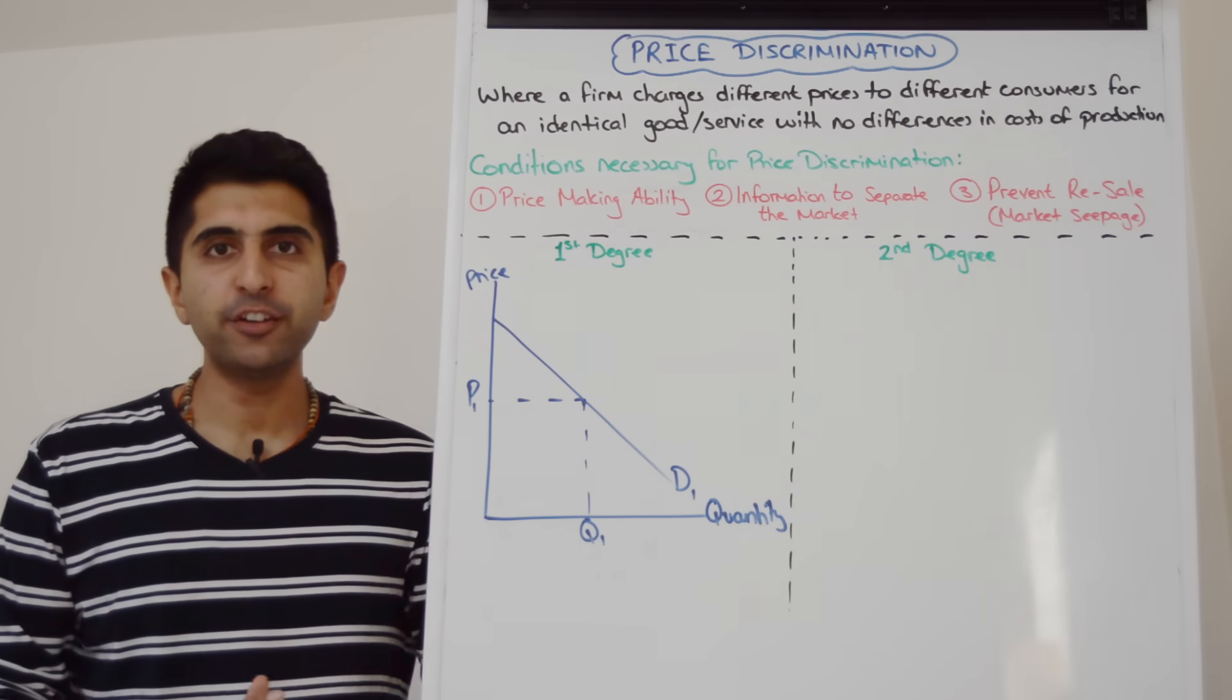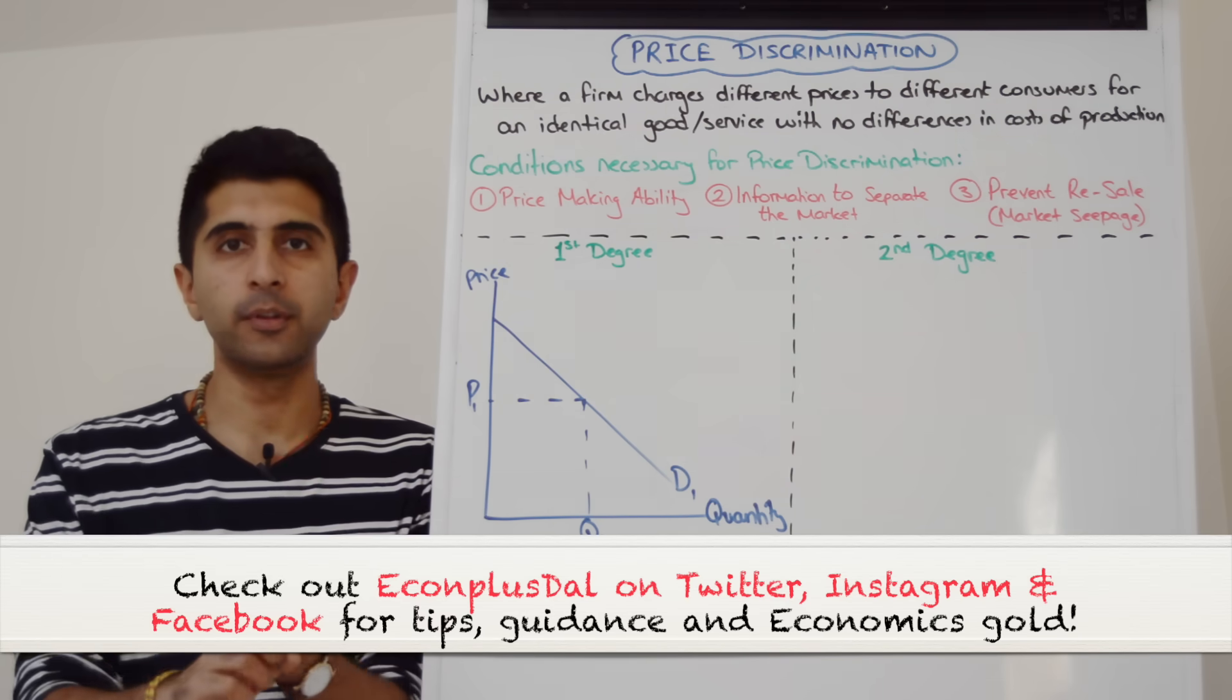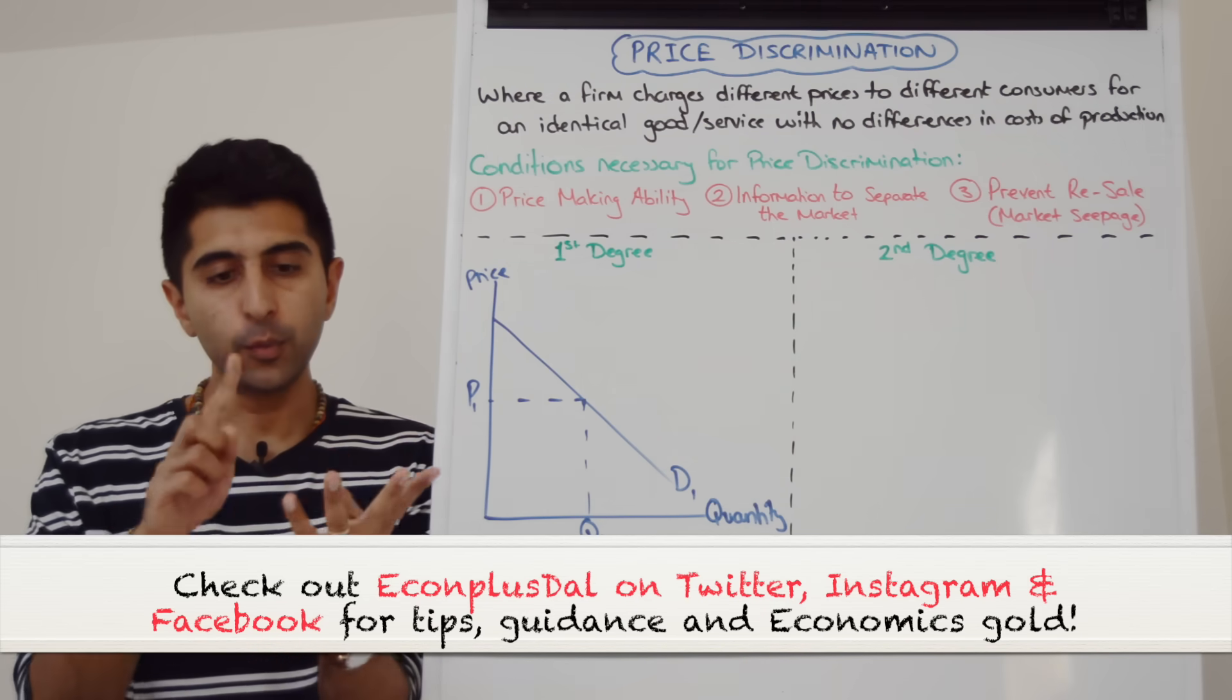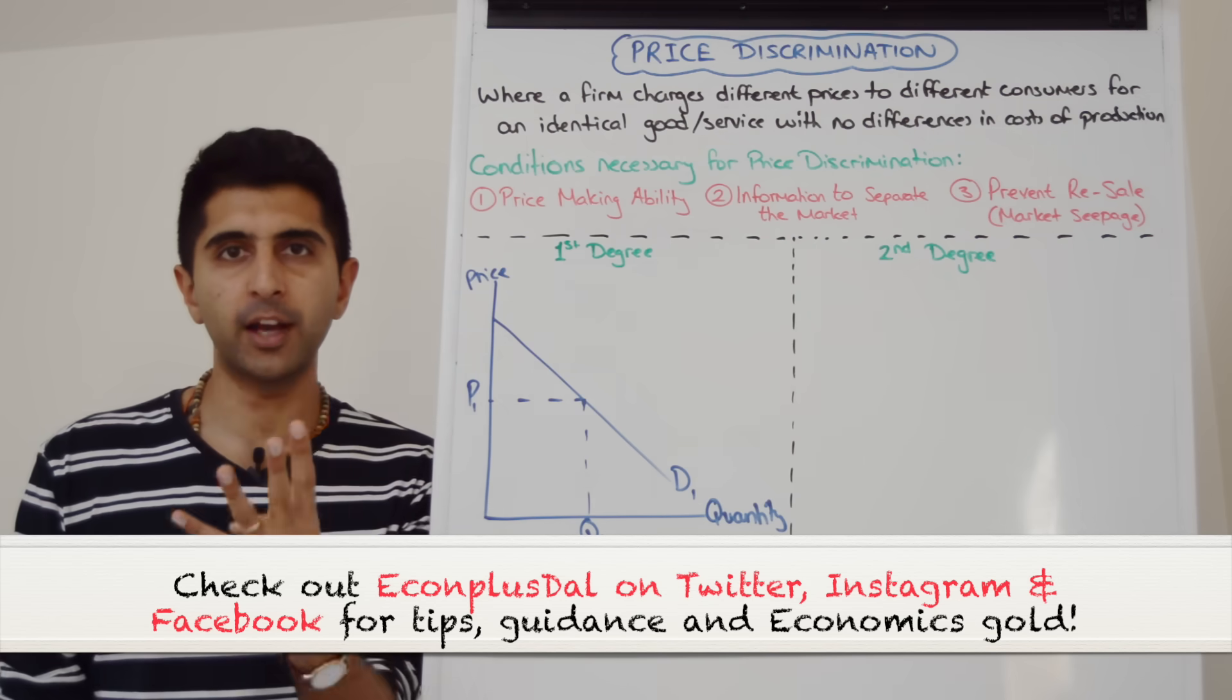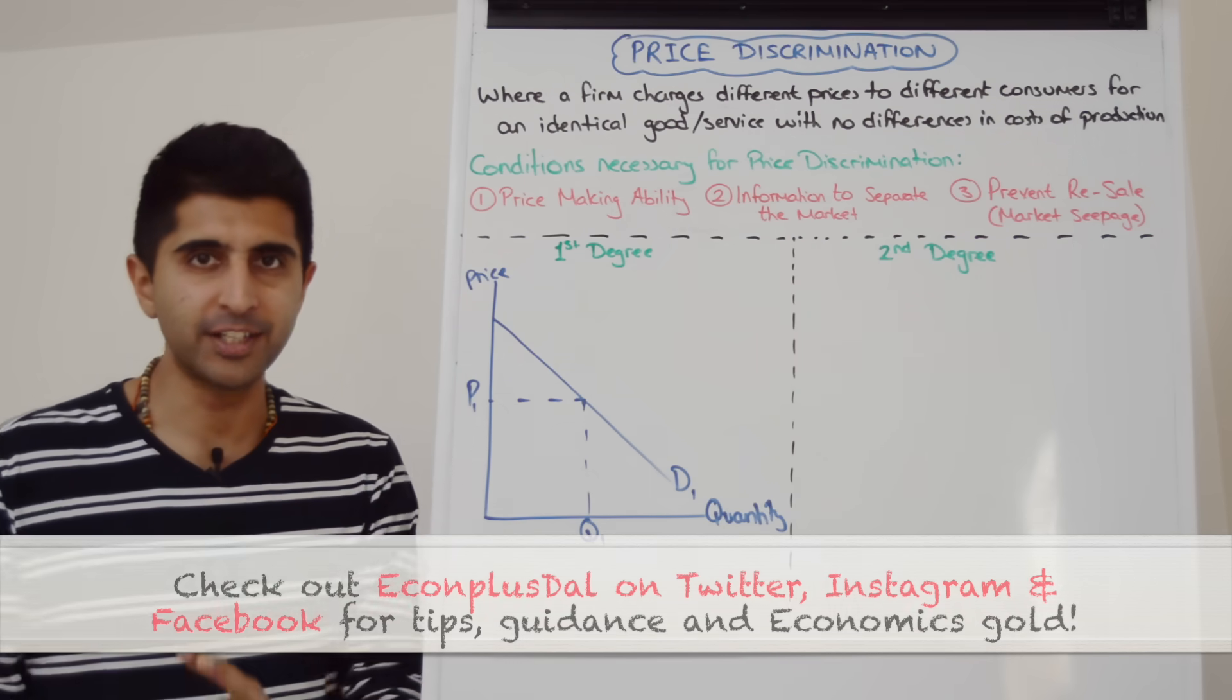Hi everybody! Price discrimination occurs when a firm charges different prices to different consumers for an identical good or service with no differences in costs of production. Learn that definition in those four key ways and you'll get it right every time.